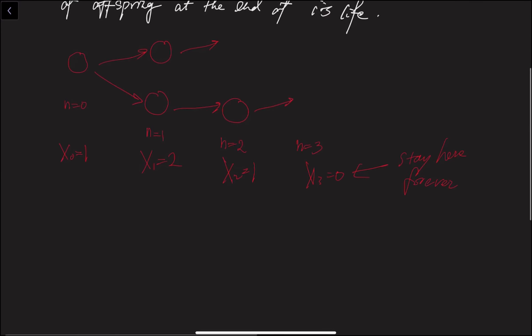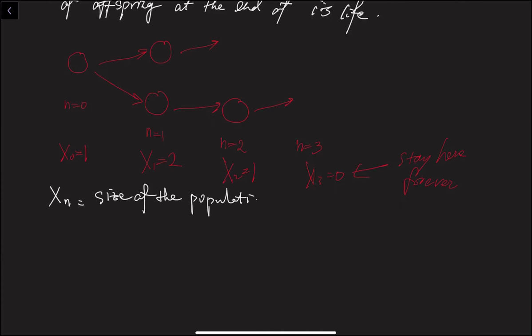Here x sub t stands for the size of the population at time t. And x sub 0 represents the initial number of individuals — the zeroth generation, which is how many individuals we start with.